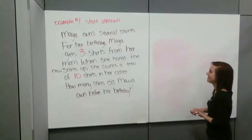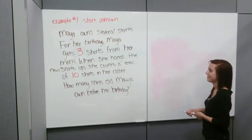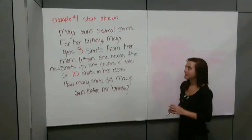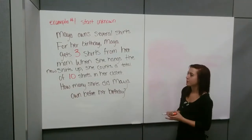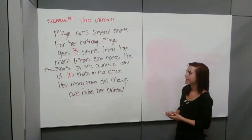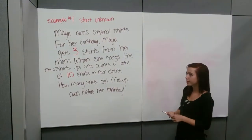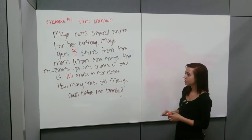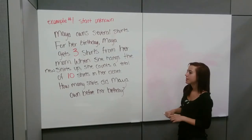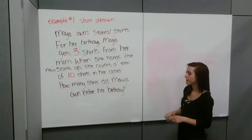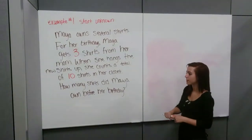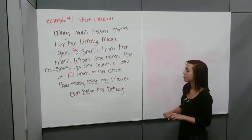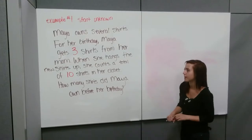The first example is Start Unknown. Maya owns several shirts. For her birthday, Maya gets three shirts from her mom. When she hangs the new shirts up, she counts a total of ten shirts in her closet. How many shirts did Maya own before her birthday?